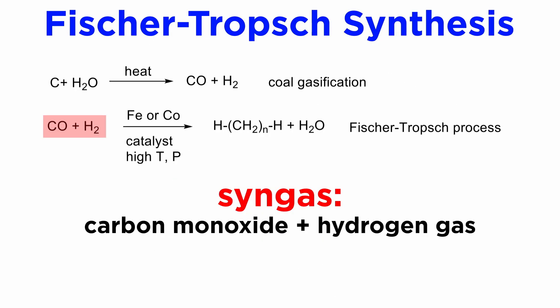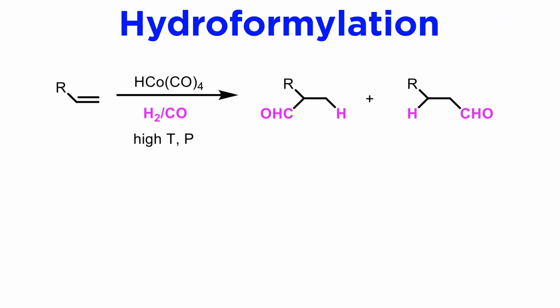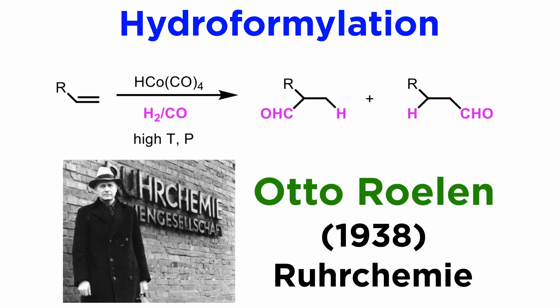We learned about syngas in the previous tutorial on the Fischer-Tropsch process, developed by German chemists, which involves the liquefaction of charcoal. Now let's learn about another application for syngas. Hydroformylation is the addition of syngas — which is hydrogen gas and carbon monoxide — to an alkene, usually a terminal one.